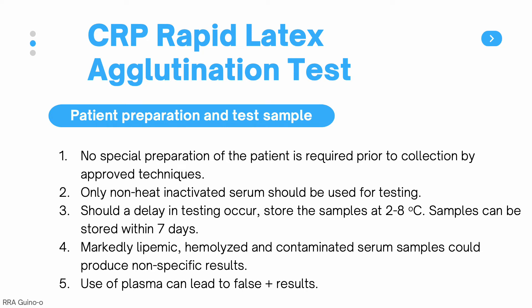No special patient preparation is required prior to collection. Blood can be collected at any time via venipuncture or capillary puncture, though venipuncture is preferred. Use non-heat-inactivated serum, as heating will deactivate CRP. If testing is delayed, samples can be stored at 2 to 8 degrees Celsius for up to 7 days. Avoid markedly lipemic, hemolyzed, or contaminated samples as they can produce non-specific results, and avoid plasma as it can lead to false positive results.